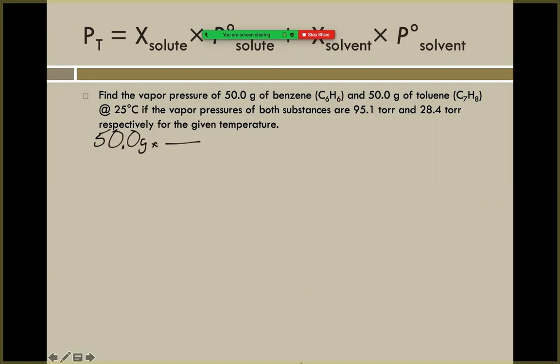If we look in the periodic table for benzene, it's got a molar mass of 78.11 grams for every one mole. When we do that math, we come out with 0.6401 moles of our benzene, our C6H6. So we know our first mole value here.